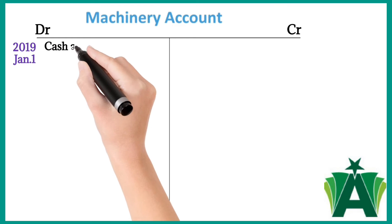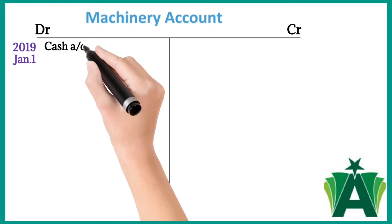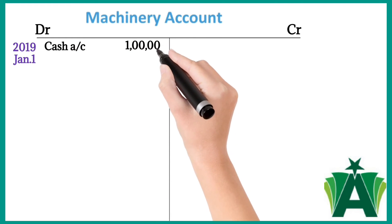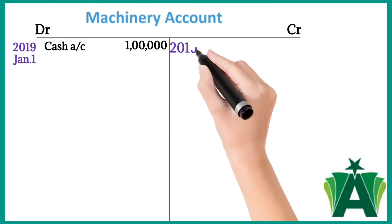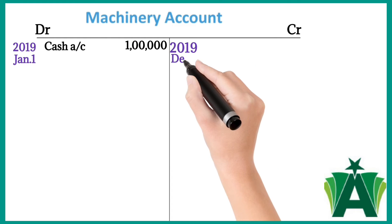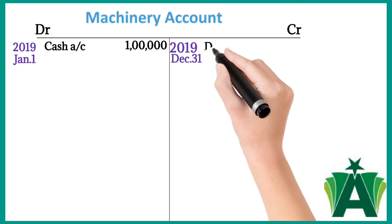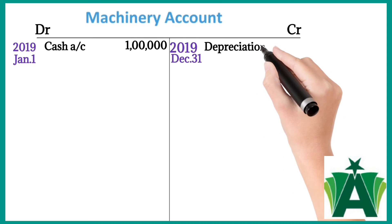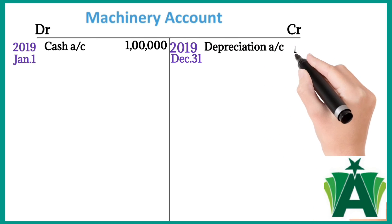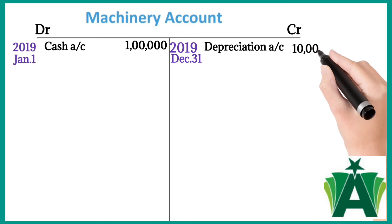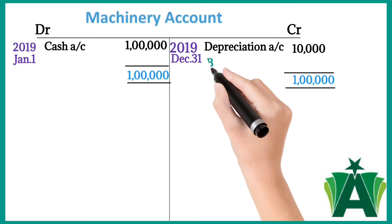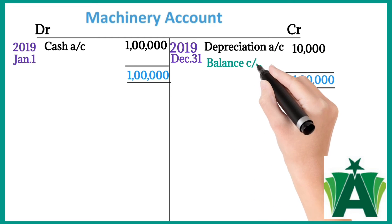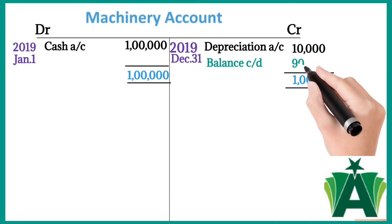In the machinery account for 2019: on January 1st, the machinery account is debited with reference to the cash account for one lakh. On December 31st, the machinery account is credited with reference to the depreciation account for 10,000. The closing balance of the machinery account is 90,000.